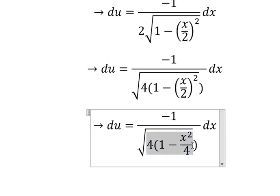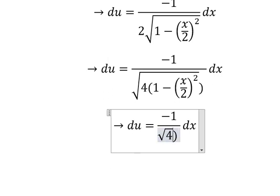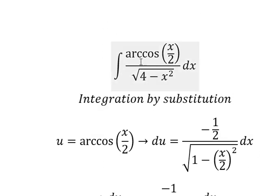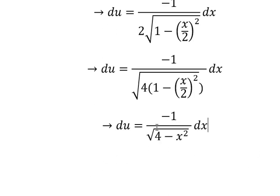And now we simplify and we have four minus x square. So because we don't have the negative sign here, so we put the negative go to the left.